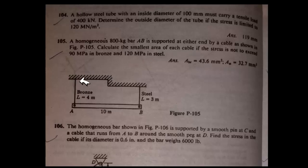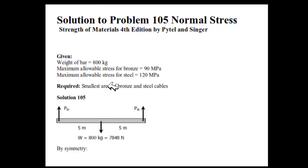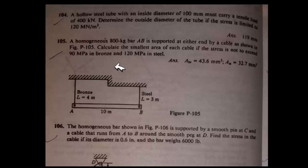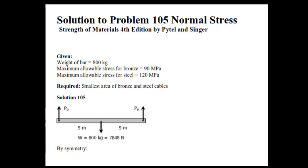This is our solution to problem 105, normal stress. The given data is weight of bar 800 kg, this is the simple diagram, maximum allowable stress for bronze is 90 megapascals, and maximum allowable stress for steel is 120 megapascals. Both are given in the problem. What we need to find is the smallest area of bronze and steel cable.